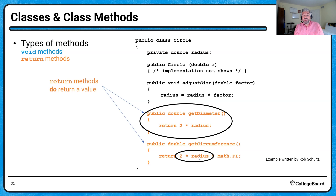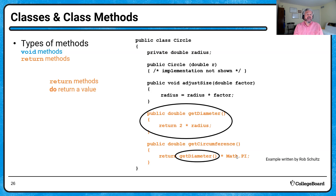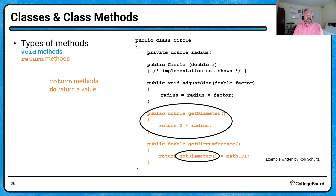Ideally, the solution would look like calling getDiameter and then multiplying by pi. So that is our quick review of classes and class methods.